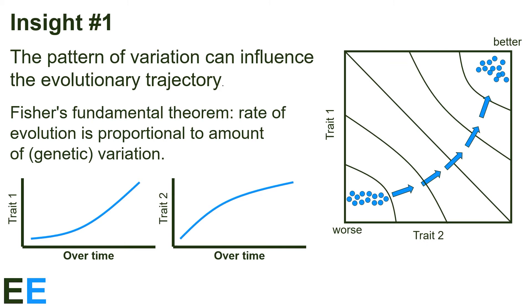On the landscape, the population will take a curved route to the final state. Looking at the plots of the separate traits now, we can see them respond differently. Trait one is slow to change initially, but increases later. Trait two increases fastest initially, but then more slowly at the end.